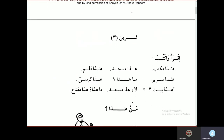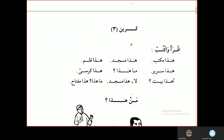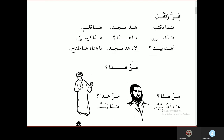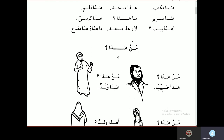Exercise 3 — Ikhra' waktub, Read and write. Hadha maktabun — this is a writing desk. Hadha masjidun — this is a mosque. Hadha kalamun — this is a pen. Hadha sariirun — this is a bed. Ma hadha? Hadha kursiyyun — this is a chair. Ahadha baitun? — Is this a house? La, hadha masjidun — No, this is a mosque. Ma hadha? Hadha miftahun — this is a key.